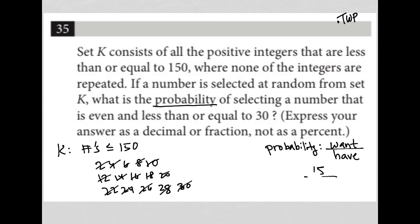So 150 is what I have. So what is the probability there? It's 15 over 150. It does say express your answer as a decimal or a fraction, which means I could just say, hey, 15 goes into 15 once, 15 goes into 150 ten times. So my answer would be 1 tenth.